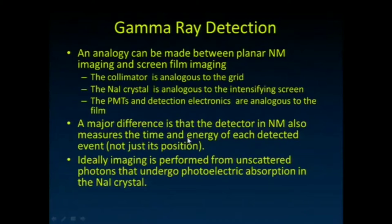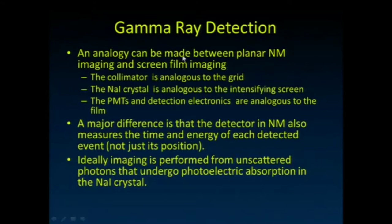We've talked about how radioactive decay occurs and what ideal imaging agents look like, but now how are we going to stop that radioactivity? I'm going to make an analogy between the planar nuclear medicine imaging camera and screen film or digital imaging, because the collimator is kind of analogous to the grid that we talked about.